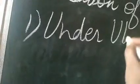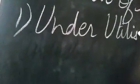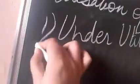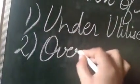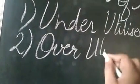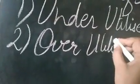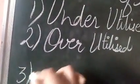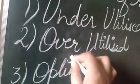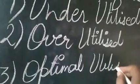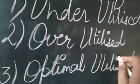There are three types of utilization: first, underutilized — meaning not used properly, resources are not used to their full potential. Second, overutilized — meaning used in excess. Third, optimal utilized — meaning best use of available resources.